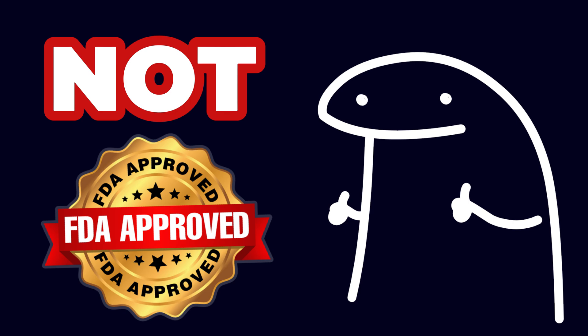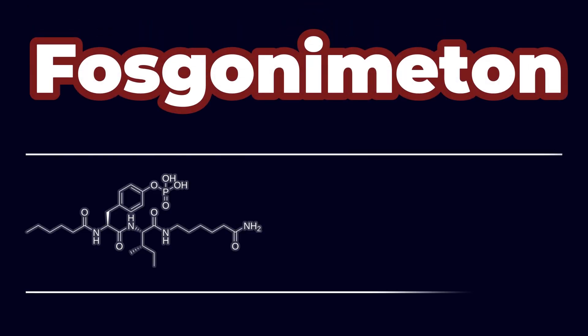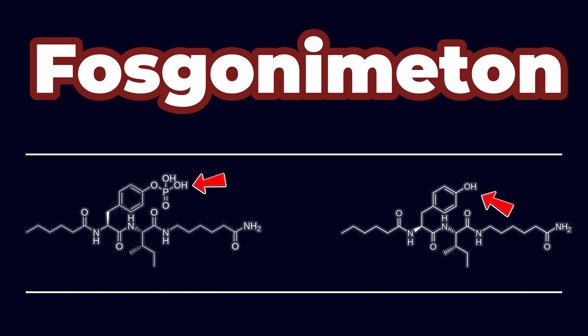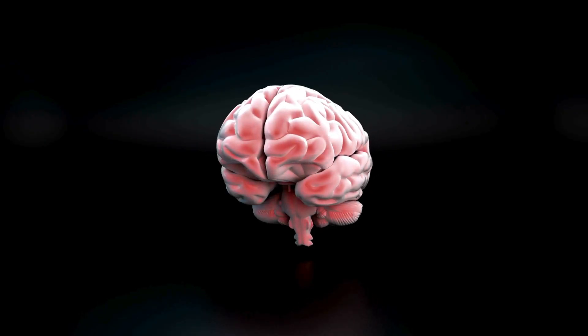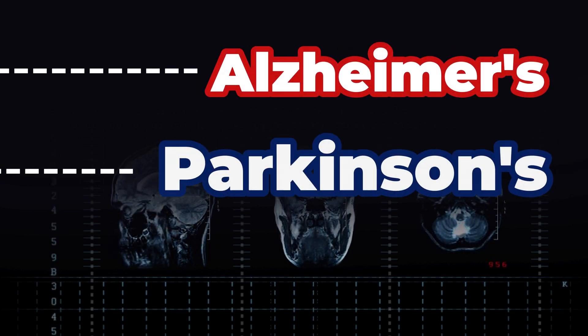While not yet FDA-approved, Phoscanimatin, a phosphate prodrug of Dihexa, is currently in clinical trials for the treatment of neurodegenerative diseases such as Alzheimer's and Parkinson's.